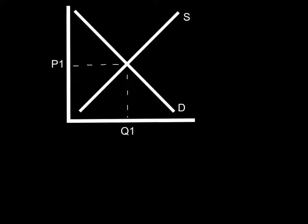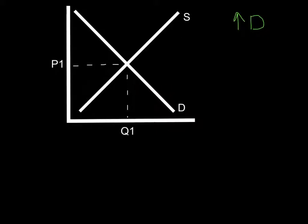The first graph we're going to look at is an increase in demand. An increase in demand is a right shift in the curve. Remember, demand curves only shift right and left — they never shift up and down, only right and left.